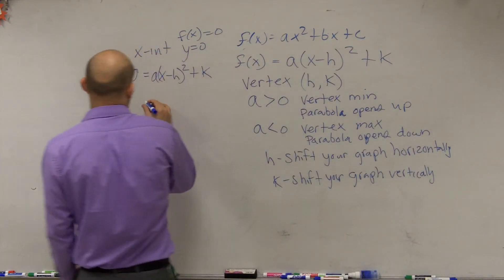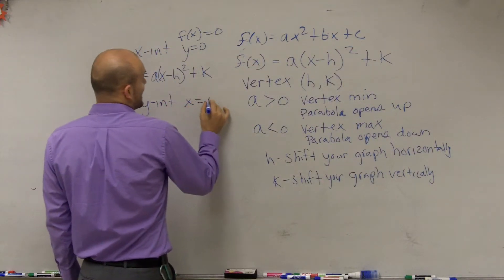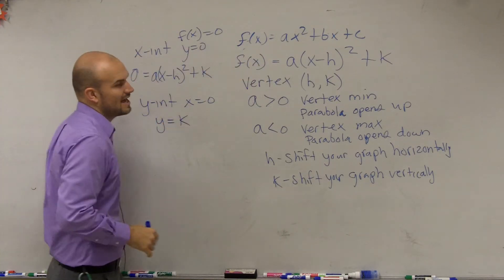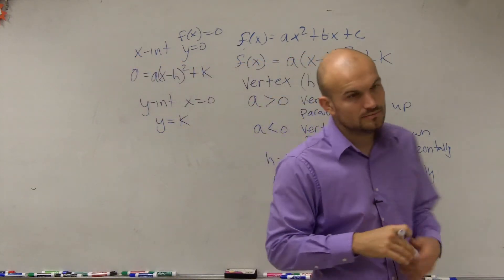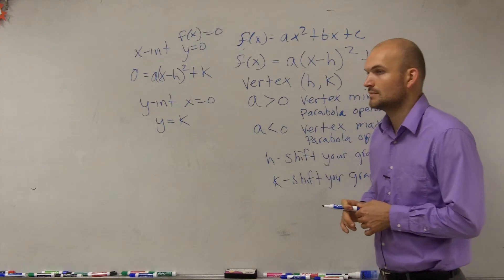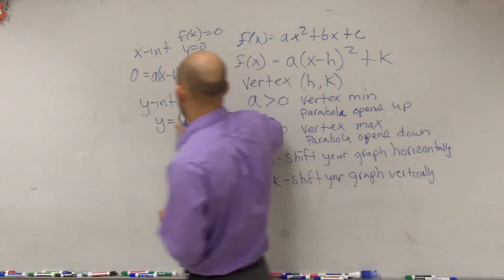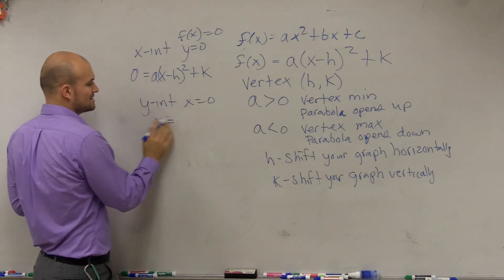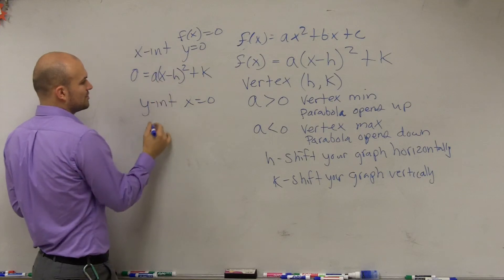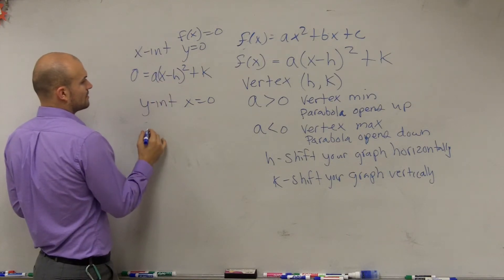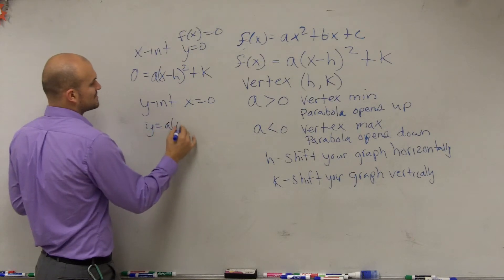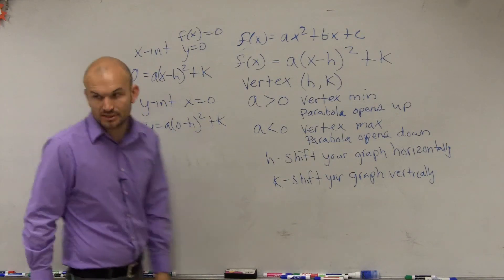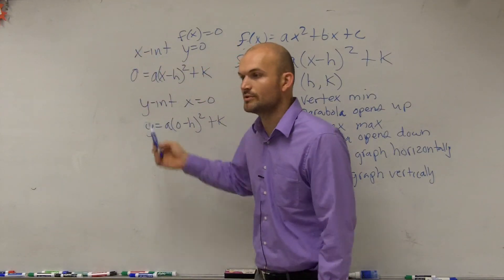And then, the same thing goes for the y intercept, which is when x equals 0. And again, your y intercept is going to equal k in this formula. Wait, no, actually, no. My bad. It's not always going to equal your k, because you might have a transformation. So, it's not going to be k. But what you'll do is you'll just plug it in. So you'd say, y equals a times 0 minus h squared plus k. And then, you just need to figure out what your value of y would be. Because remember, these are all real numbers.